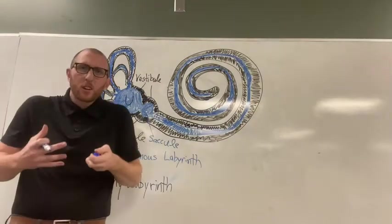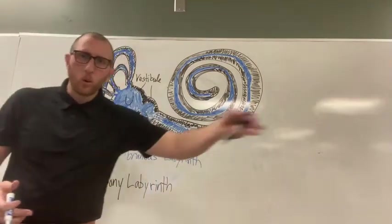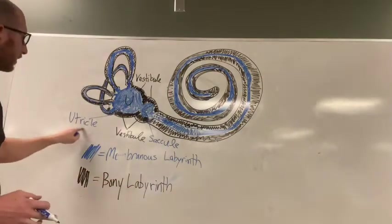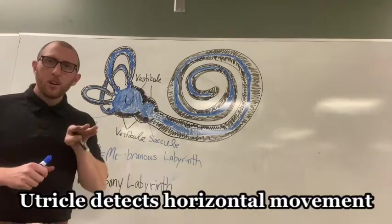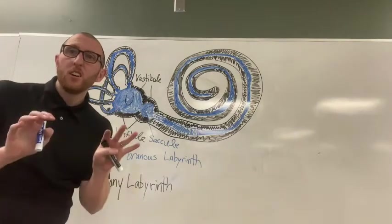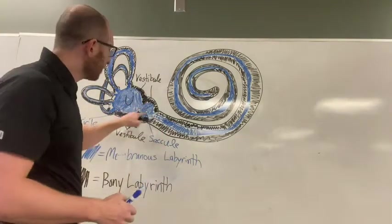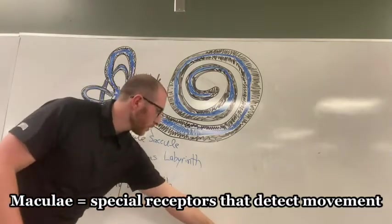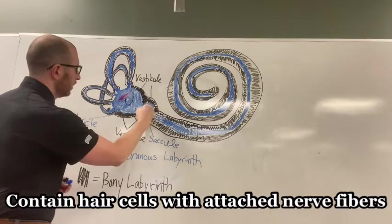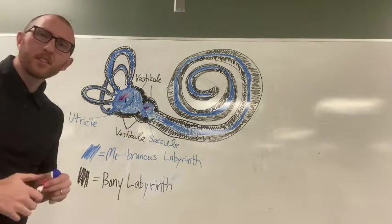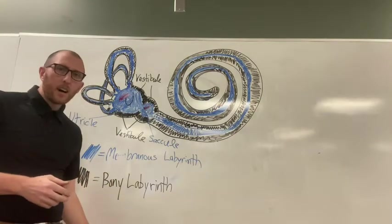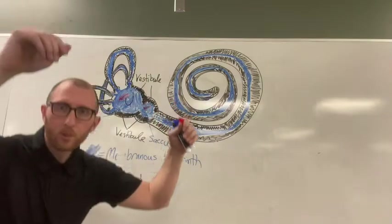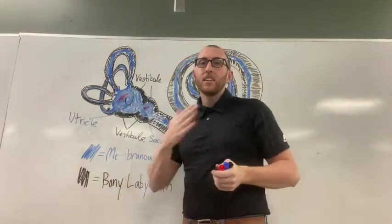The vestibule covers the utricle and the saccule. The utricle and saccule detect linear movement, which can be horizontal or vertical. The utricle detects horizontal movement, and within these areas you have special sensors called maculae that actually detect the movement. The saccule detects vertical movement — going up or down.